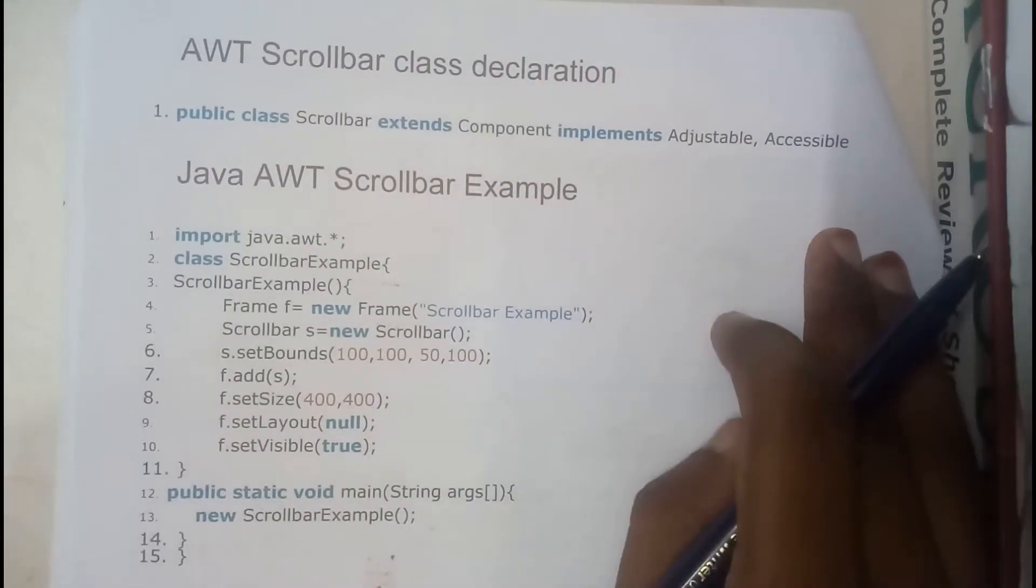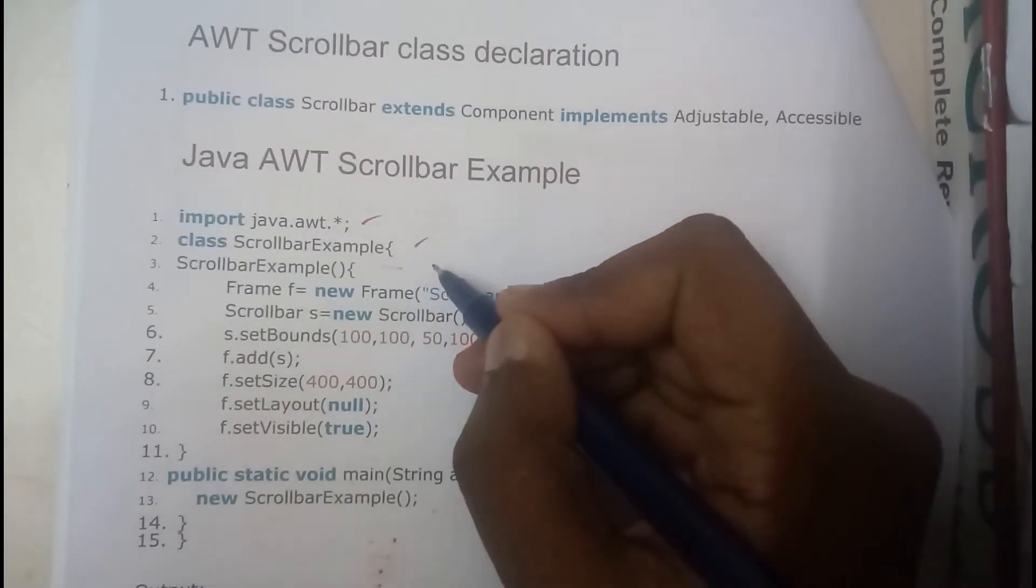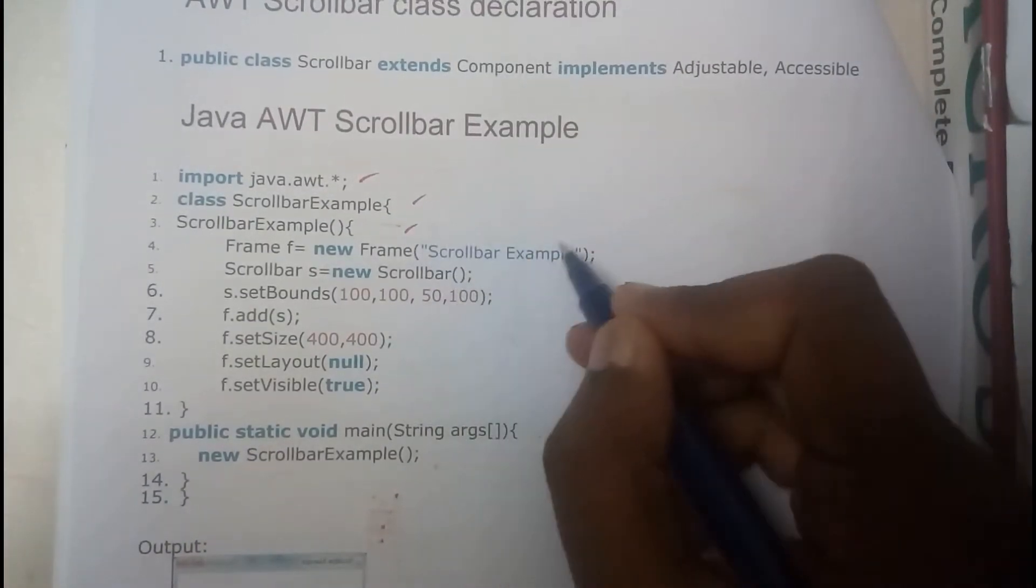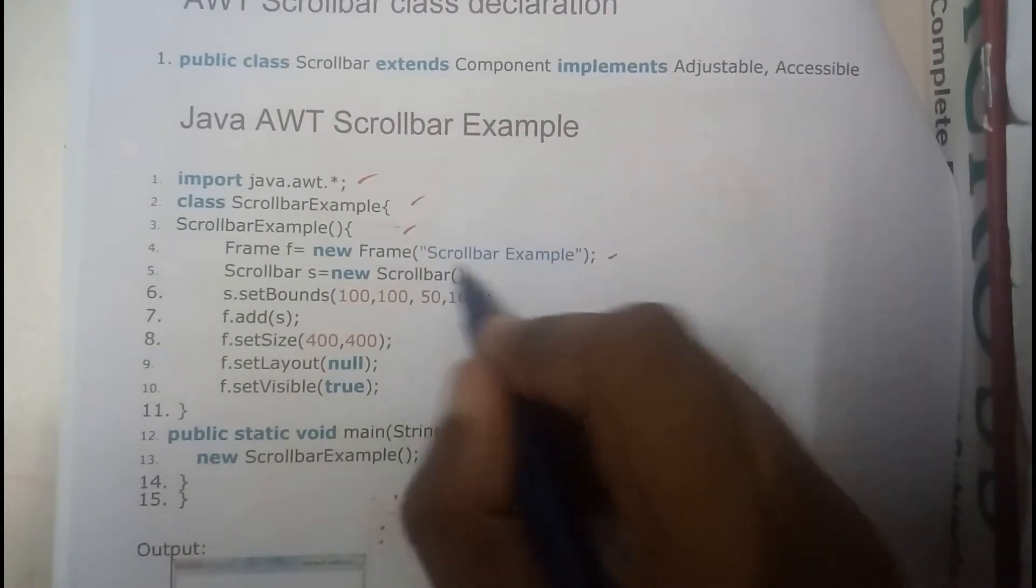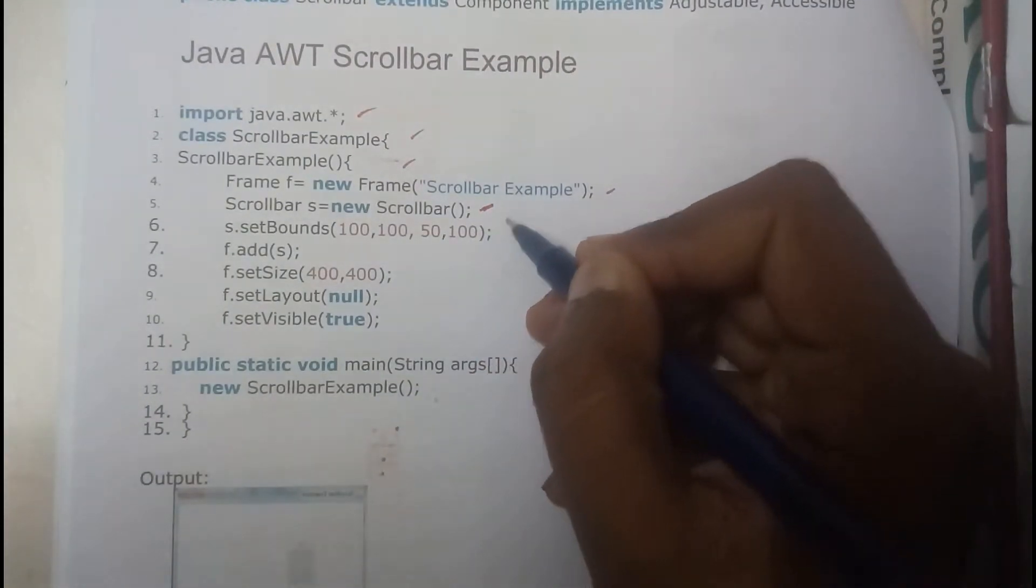Basically initially you will be importing the AWT file. Then you will be writing a class ScrollbarExample. You will be writing a constructor for that. We have given the frame name here. So we have created a Scrollbar s equal to new Scrollbar.